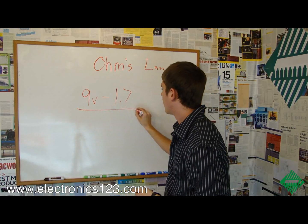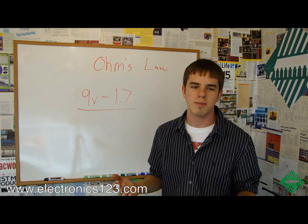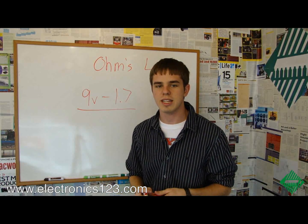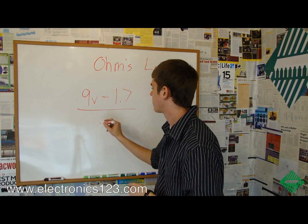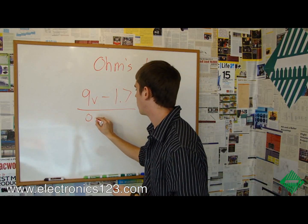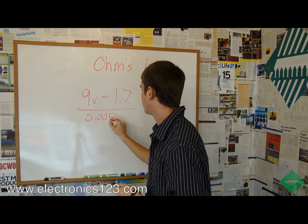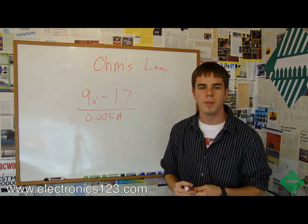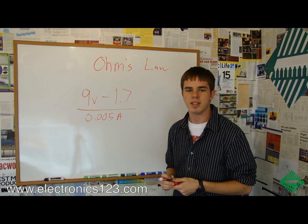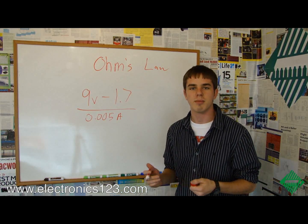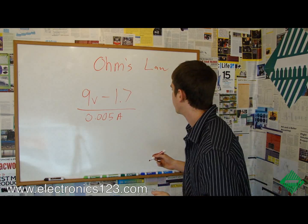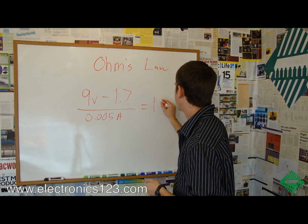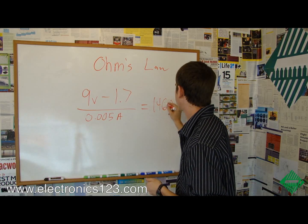We're going to divide that by the number of amps. This also varies, and it helps to know specifically for your LED, but for this example we're going to use 0.005 amps. This will allow us to calculate the number of Ohms required — in this case, it's 1,460 Ohms.